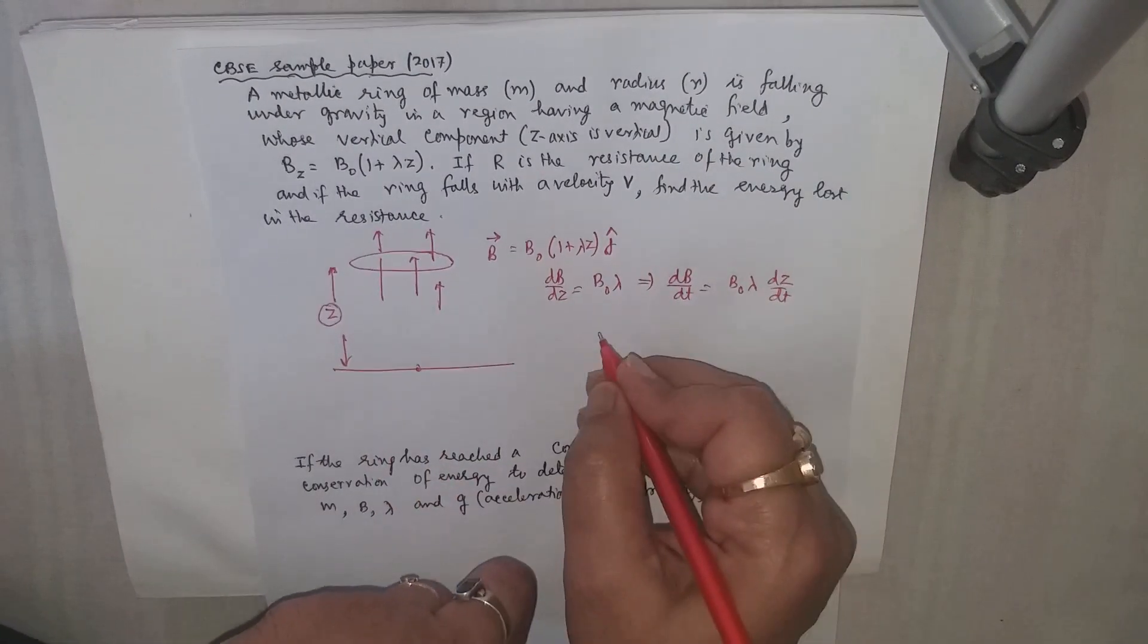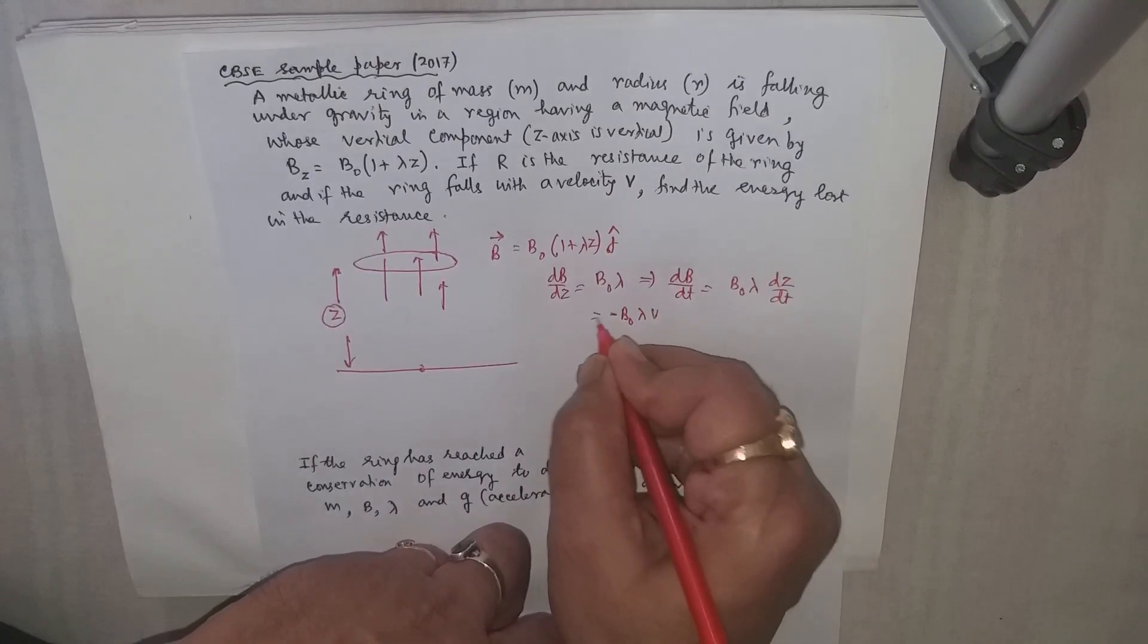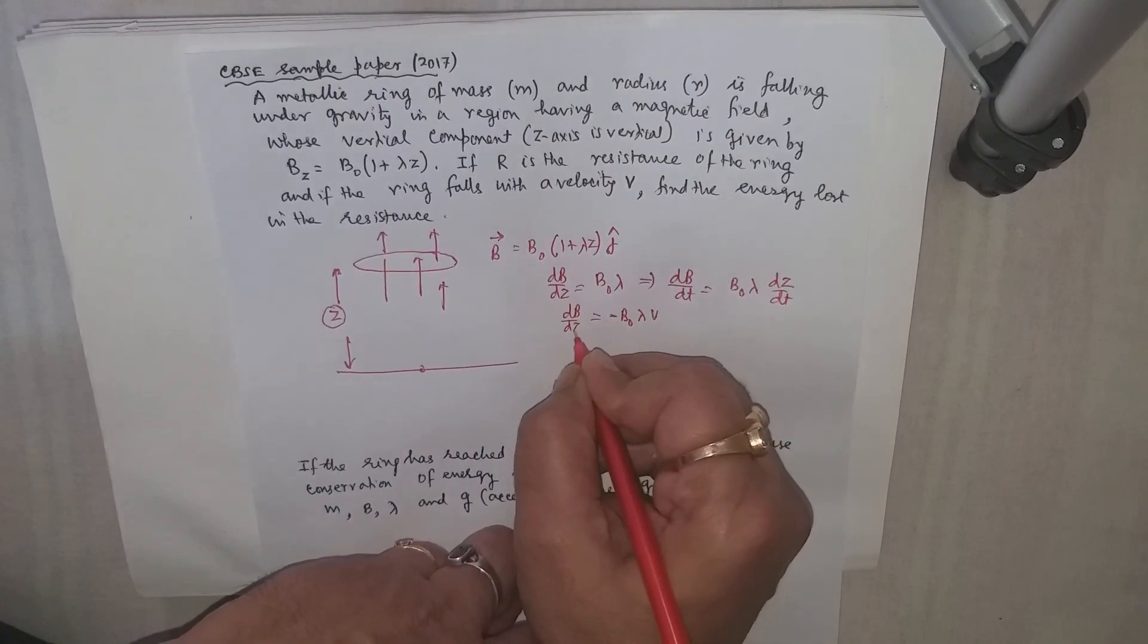And dz/dt will be minus v because it is decreasing. So we can have B₀λ times minus v, this is dB/dt.